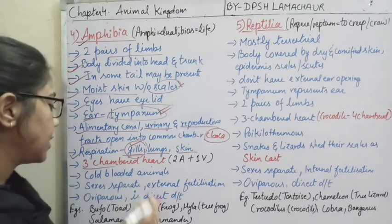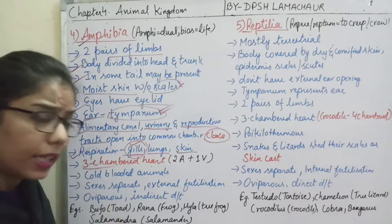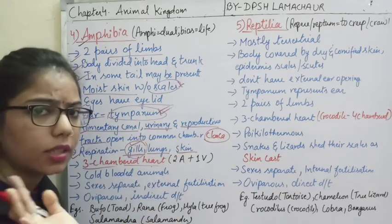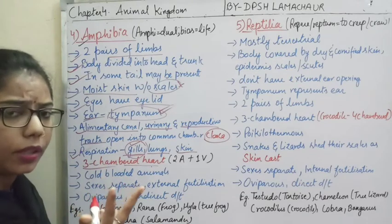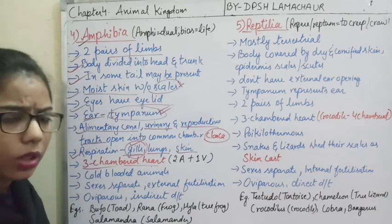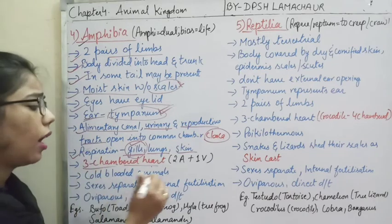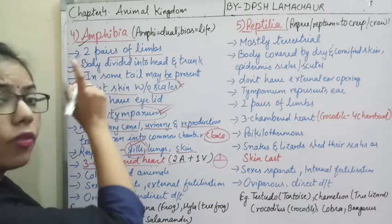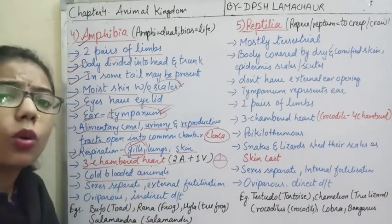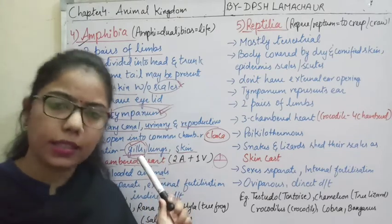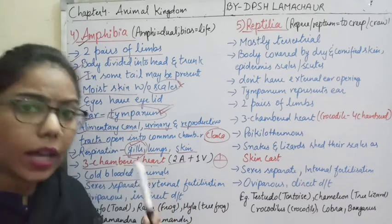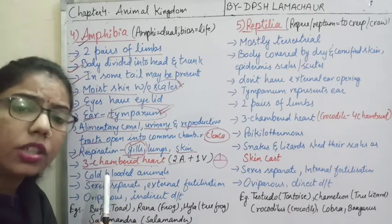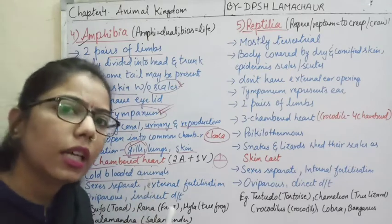The circulatory system has a three-chambered heart — two auricles and one ventricle. Previously in Pisces, the heart was two-chambered. Amphibians are cold-blooded animals that cannot regulate their body temperature according to environmental conditions — this condition is known as poikilothermous.